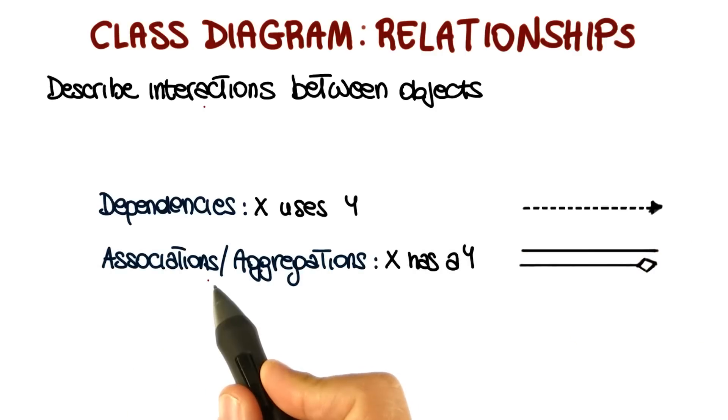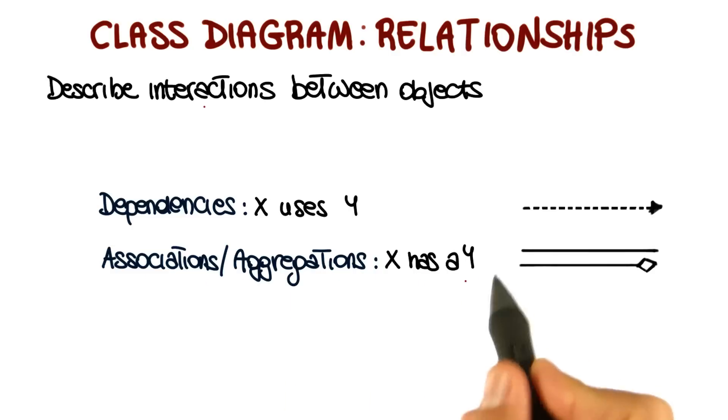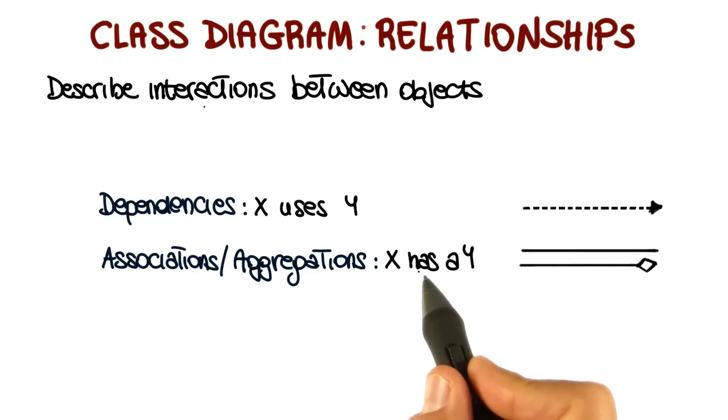The second type of relationship is an association that can also be an aggregation. We'll see what the distinction is. But basically what this means is that we can express that as x has a y, so x contains a y.